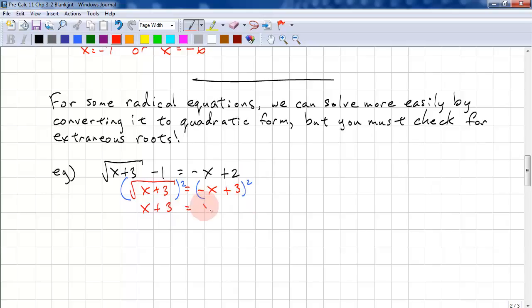And we FOIL this. We get x squared. And this is minus 6x. And we have plus 9. We have to bring this over to the other side, so we have 0 equals x squared. This becomes another minus x, so this is minus 7x. This becomes negative 3, so we have plus 6. Now, any time this is 1 less than this, this is our factor and the other factor is 1. So, we have x minus 6, x minus 1. So, x equals 6 or x equals 1.